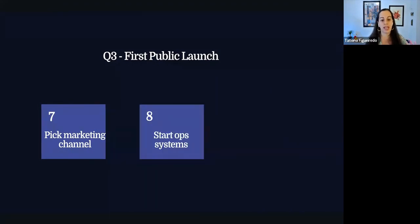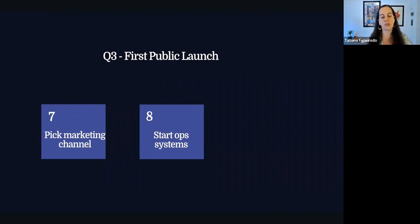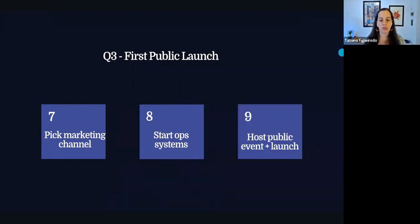The second month is super important in order for you to get to every quarter and be increasing the amount you're making from your community. You have to have your systems really tight. It's time to start writing your SOPs and building a system that you can repeat. You're taking what you learned from the soft launch and applying it to this one, and seeing what else you need to add to go a little bit bigger for the first official launch.